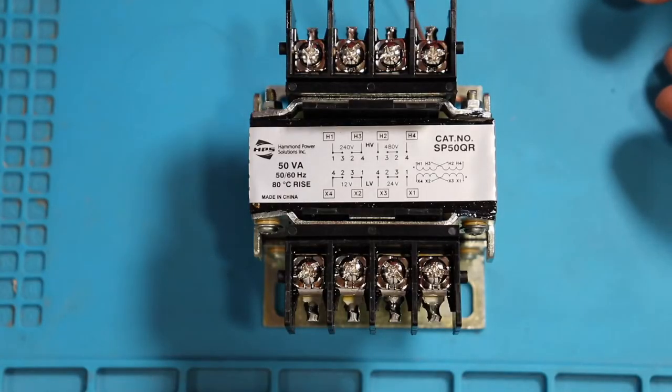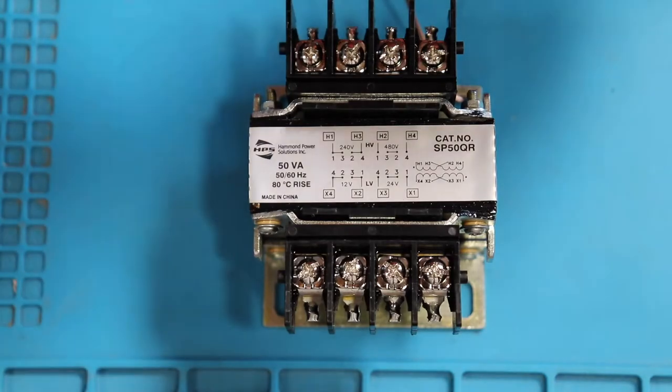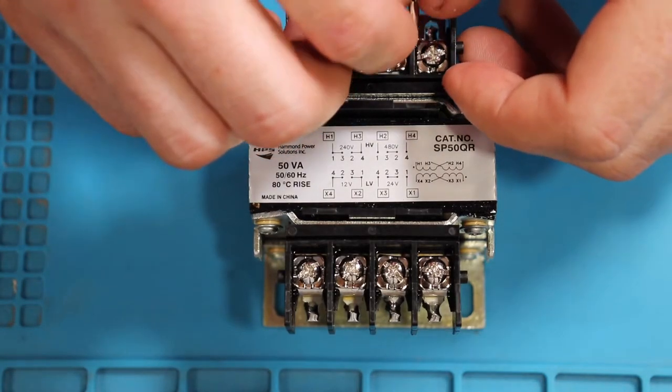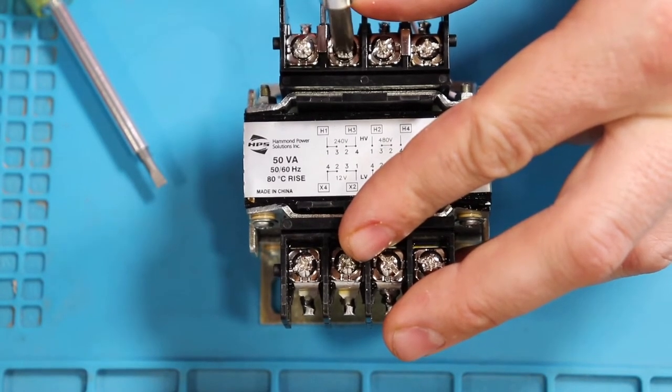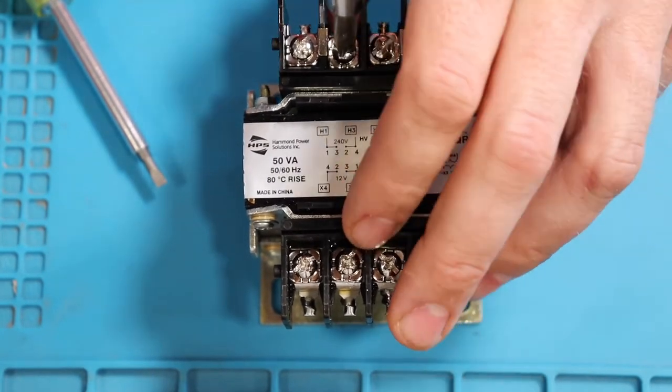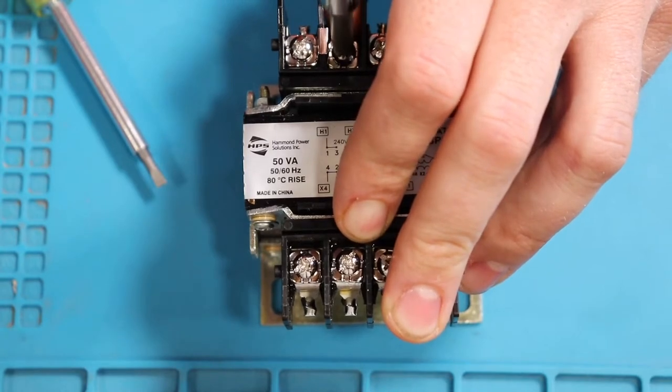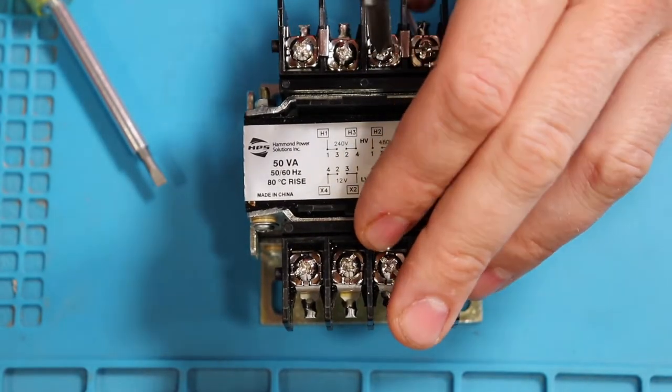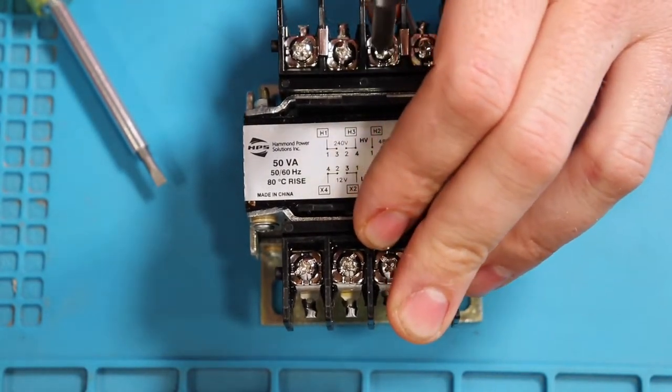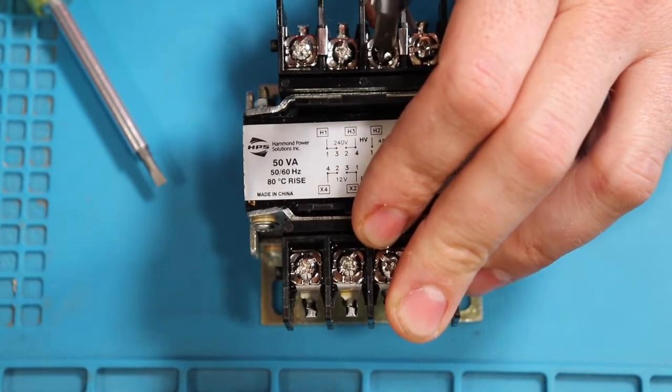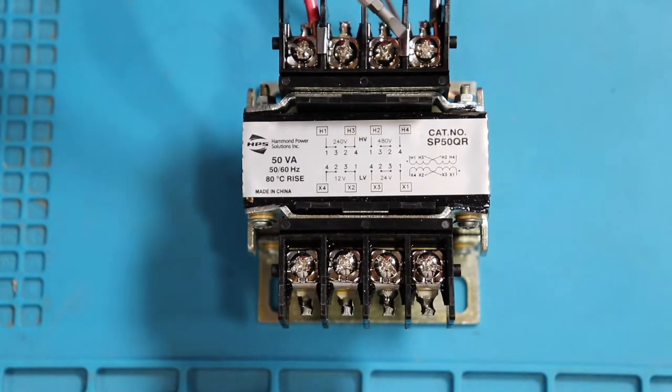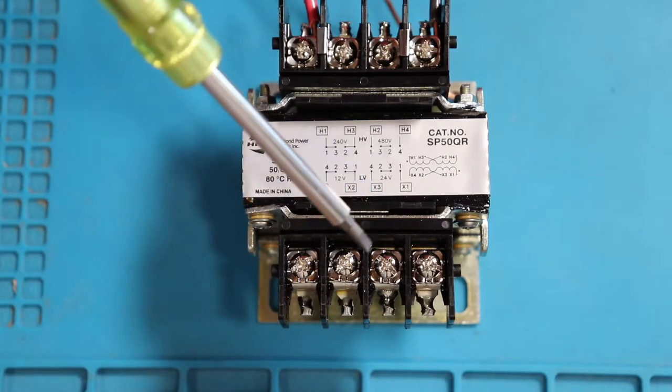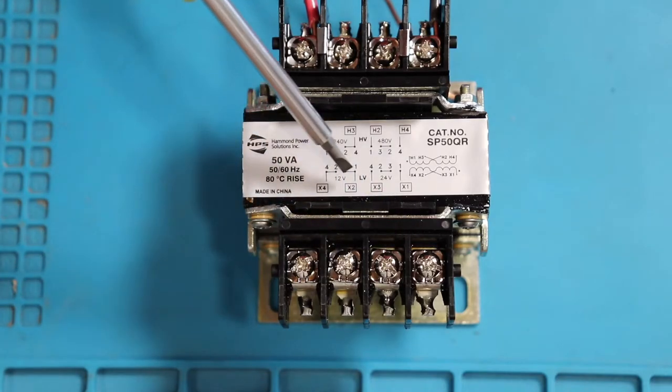Now it's time that we can add our jumpers in and connect our 240 volts. So now that everything's connected on our primary side, our jumpers and our input voltage, before we turn the power on, we'll set up our secondary side for 12 volts.